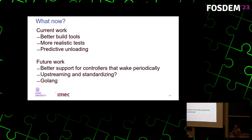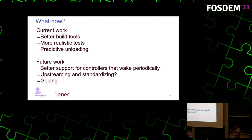So what are we doing now? We have this basic proof of concept to show that this seems to be a very good approach to lower the footprint of the Kubernetes control plane, and we want to do more with this. Currently we're improving the build tools and making more realistic tests. All the tests we did were a worst-case scenario of operators constantly doing stuff. However, in the real world most operators don't do anything most of the time, so we're creating more realistic tests to see what the performance benefits are for real workloads. We're also working on predictive unloading, so that if we know an operator is going to have to run again in a few milliseconds, we don't unload it because it's better to just keep it running.